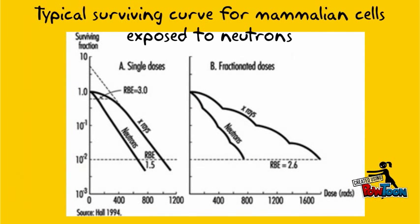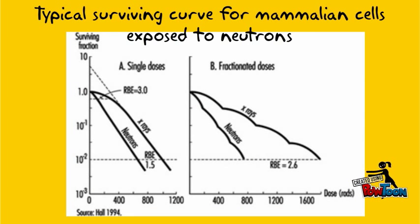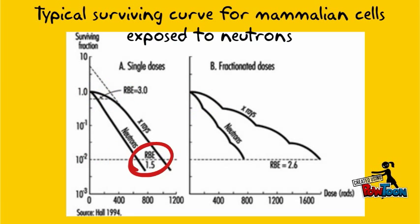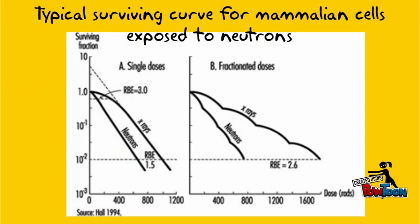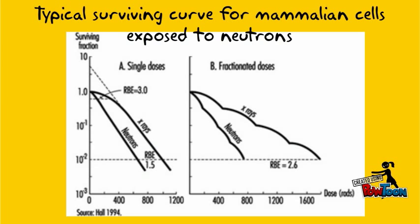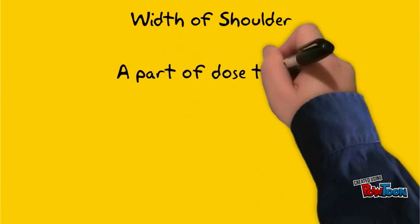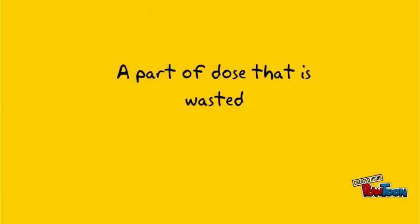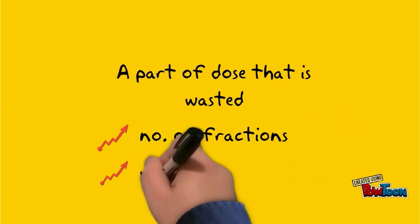From the graph, the information that we can obtain includes the width of shoulder, comparison of RBE between X-rays and neutrons, and comparison of RBE for neutrons in single dose and fractionated dose. Width of shoulder represents a part of the dose that is wasted. The larger the number of fractions, the greater the extent of the waste.